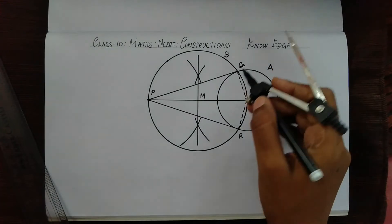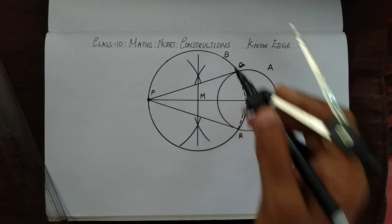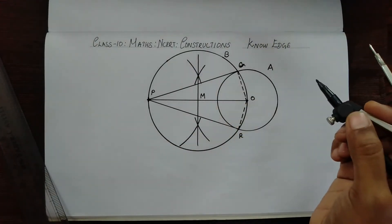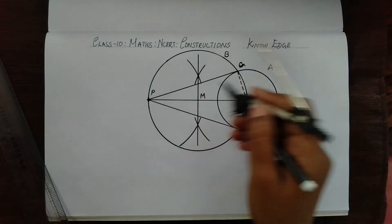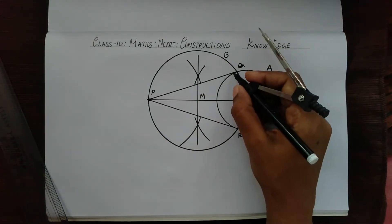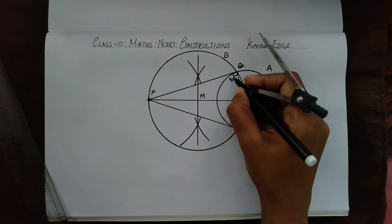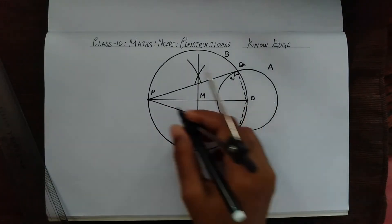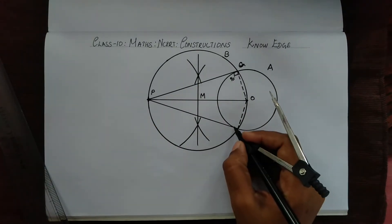Now you can see that this is a semicircle and this is a triangle formed inside the semicircle. A triangle formed inside a semicircle is always a right angle triangle, so this angle is 90 degrees. Same way, this is a semicircle and this triangle formed inside is a right angle triangle and this is 90 degrees.